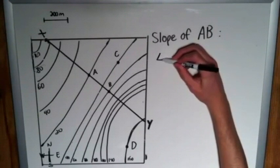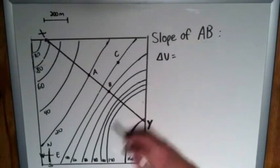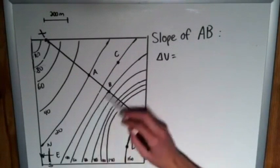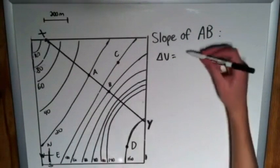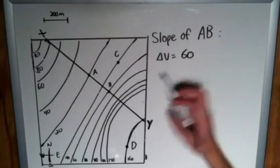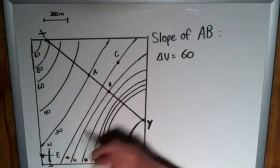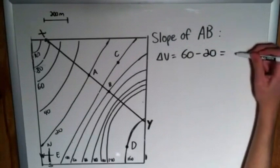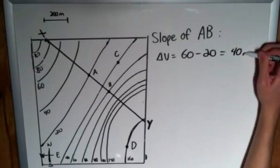Let's start by finding our delta V. B is on the 60 contour line, so we can say that is 60. And A lies on the 20-meter contour line. 60 minus 20, our vertical change is 40 meters.